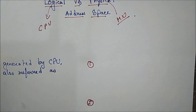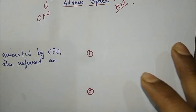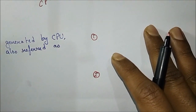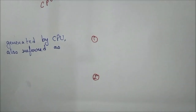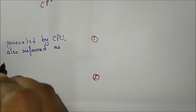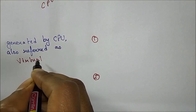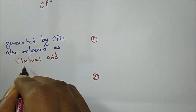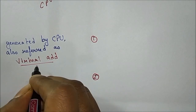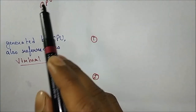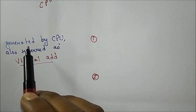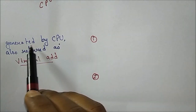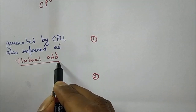Now the first difference between logical and physical address: the logical address is generated by the CPU, and it is also referred to as a virtual address. This is the main important point you should remember. Since it is logical, it means it is an illusion, and it is also referred to as a virtual address.